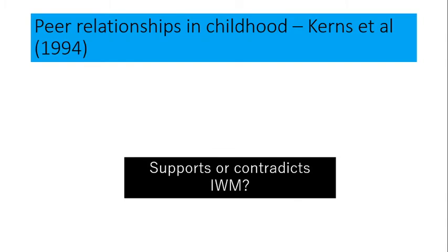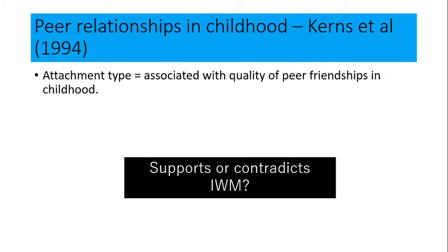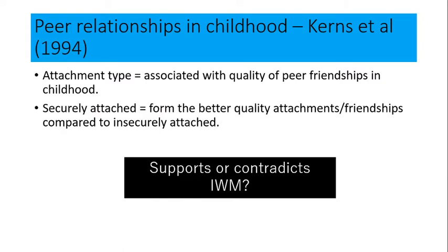So we're going to go through the research. First: peer relationships in childhood. This was a study by Kearns, who found that attachment type was associated with the quality of peer friendships in childhood. Those who were securely attached formed better quality friendships compared to those who were insecurely attached. This study supports the internal working model because it's saying that those children who were securely attached had better friendships, suggesting early attachment forms a pattern for how they act in their friendships later on.